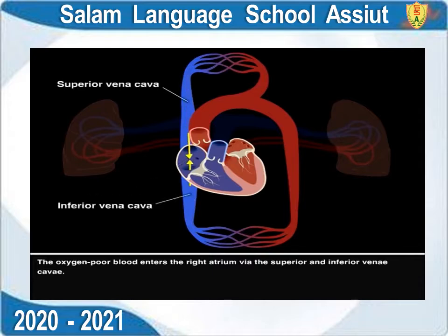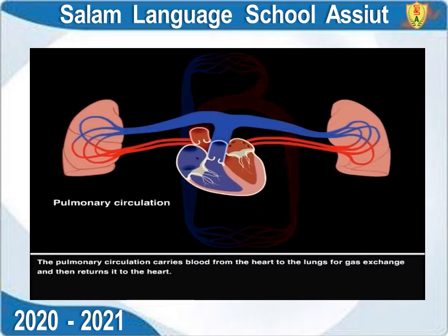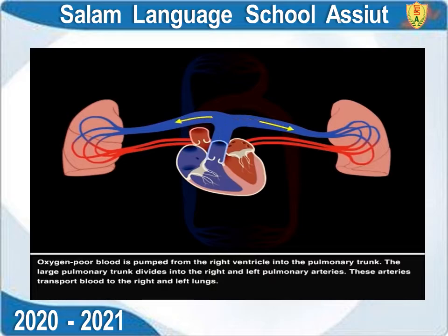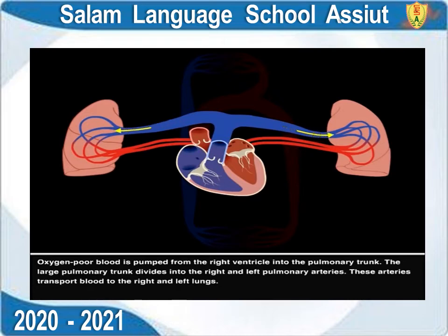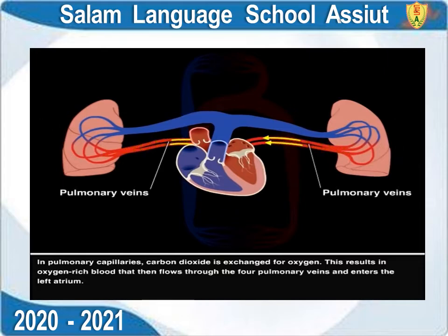In the systemic capillaries, oxygen is exchanged for carbon dioxide, resulting in oxygen-poor blood. This oxygen-poor blood enters the right atrium via the superior and inferior vena cavae. The pulmonary circulation carries blood from the heart to the lungs for gas exchange. Oxygen-poor blood is pumped from the right ventricle into the pulmonary trunk, which divides into right and left pulmonary arteries. In pulmonary capillaries, carbon dioxide is exchanged for oxygen, and the resulting oxygen-rich blood flows through the four pulmonary veins into the left atrium.